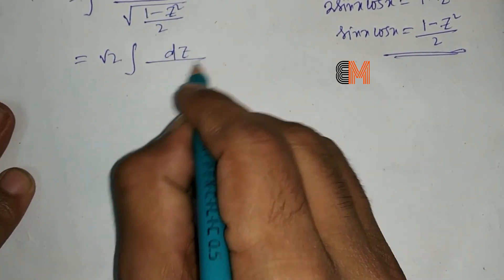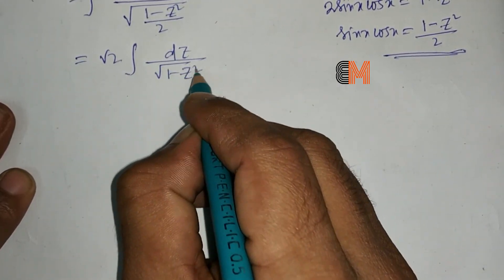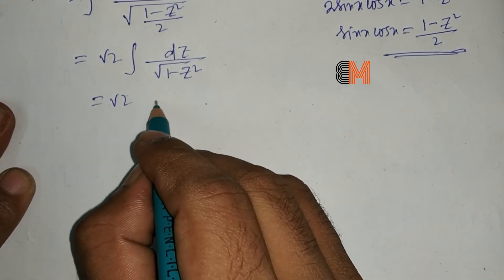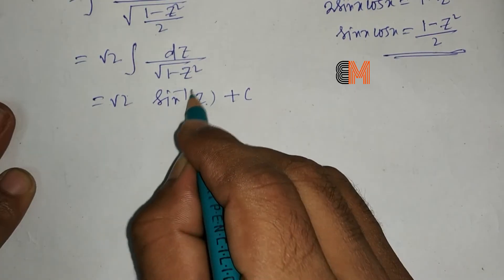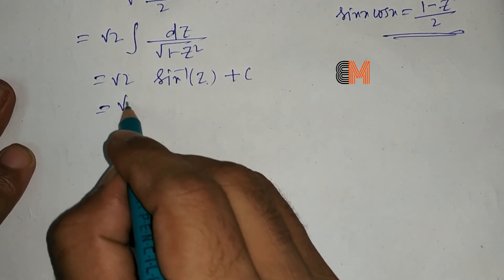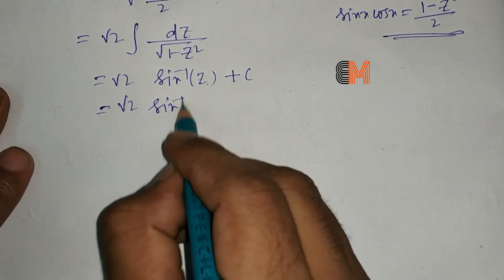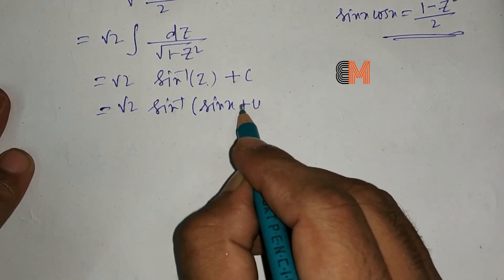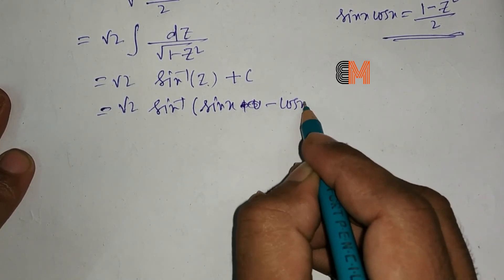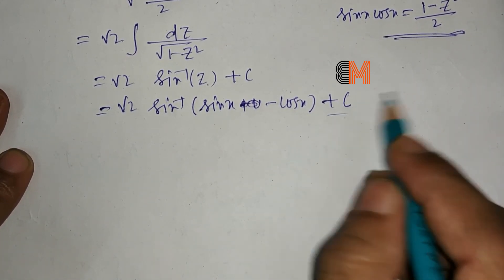This standard form gives us √2 arcsin(z) + C. Replacing z with sinx - cosx, the final answer is √2 arcsin(sinx - cosx) + C, where C is the arbitrary constant.